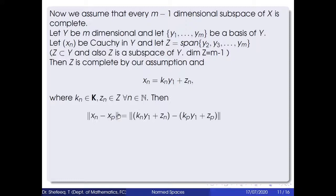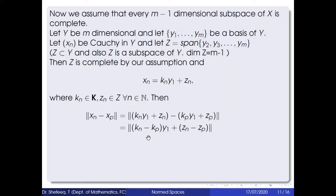Then ‖xₙ − xₚ‖ = ‖(kₙ − kₚ)y₁ + (zₙ − zₚ)‖. By part (a), this is greater than or equal to |kₙ − kₚ| · dist(y₁, Z). Since y₁ does not belong to Z and Z is closed in X (by induction hypothesis), dist(y₁, Z) > 0. Since xₙ is Cauchy, |kₙ − kₚ| ≤ ‖xₙ − xₚ‖ / dist(y₁, Z), so kₙ is Cauchy in 𝕂.